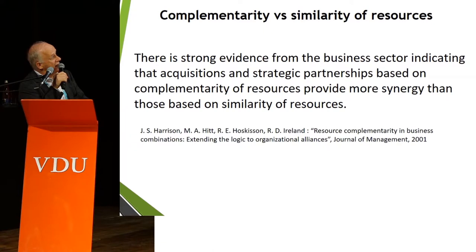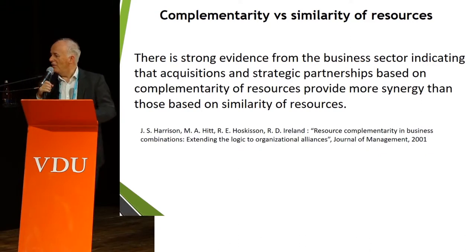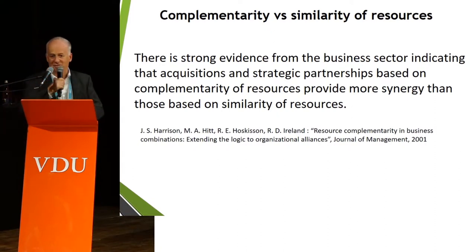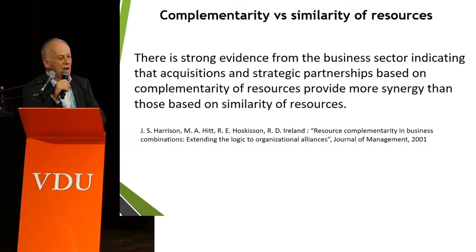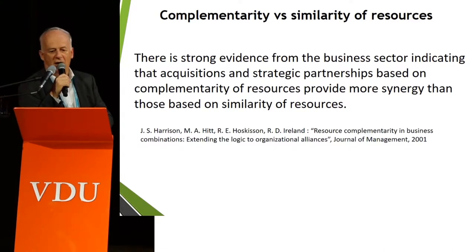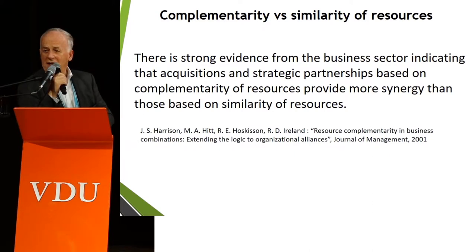There is a 2001 paper in the Journal of Management by Harrison, Hitt, Hoskinson, and Ireland titled 'Resource Complementarity and Business Combination: Extending the Logic to Organizational Alliances.' Perhaps it can apply to universities. Based on an extensive survey of strategic alliances and collaboration in the commercial sector, they found that collaboration based on complementarity rather than similarity gave better results.